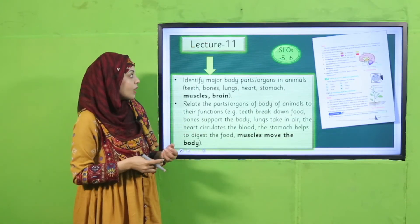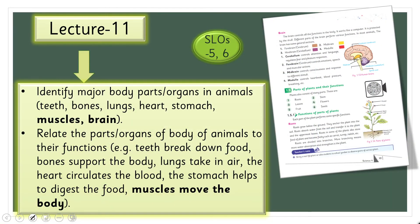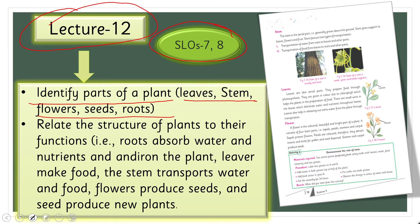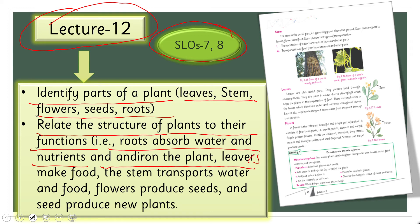In lecture number eleven, SLOs five and six continue with a discussion of muscles and brain. Students will also relate functions — muscles move the body. Then lectures covering plant parts will follow, where students will identify the parts of a plant: leaves, stem, flowers, seeds, and roots. They will also relate the structure of plants to their functions — roots absorb water and nutrients, and leaves make food, stem transports water and food, flowers produce seeds, and seeds produce new plants.